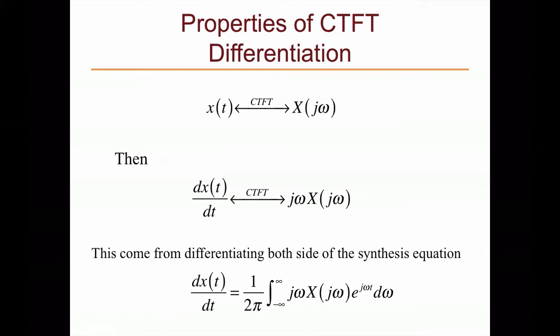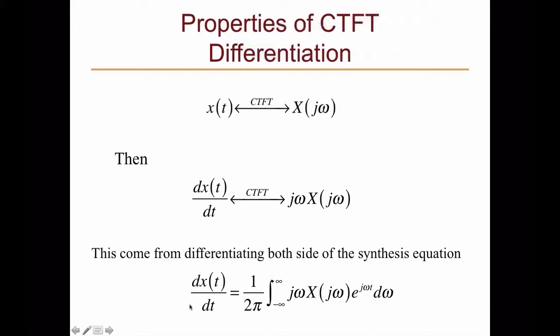The next property is differentiation. If you have differentiation in the time domain, it is represented as multiplication by jω in the frequency domain. This comes from differentiating both sides of the synthesis equation. When you differentiate both sides, the left-hand side becomes dX(t)/dt, and the right-hand side, taking the derivative of e^(jωt), brings down a factor of jω, modifying the original X(jω) spectrum accordingly.